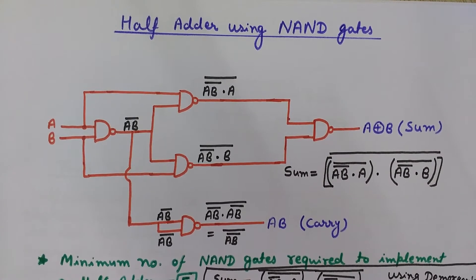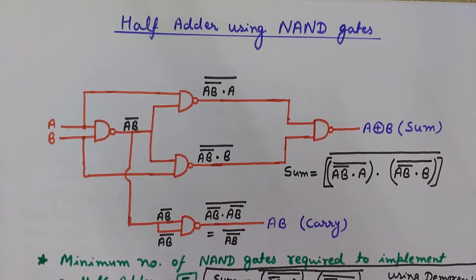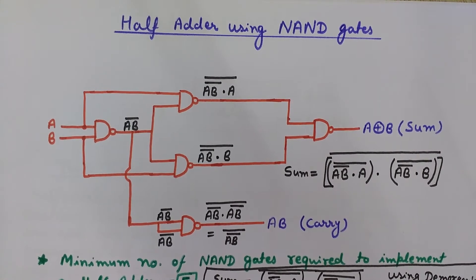Now in this video we will learn how we can create a half adder using only NAND gates. We will not use any other gates — no AND gate and no XOR gate. Only NAND gates will be used here. As you can see in this diagram, a minimum of 5 NAND gates are required to implement a half adder.